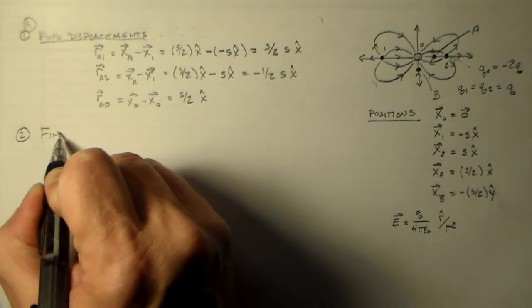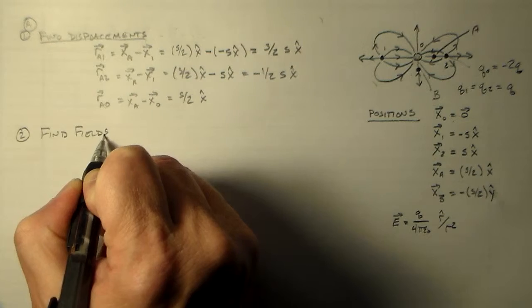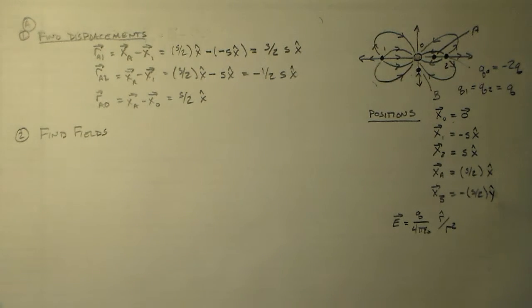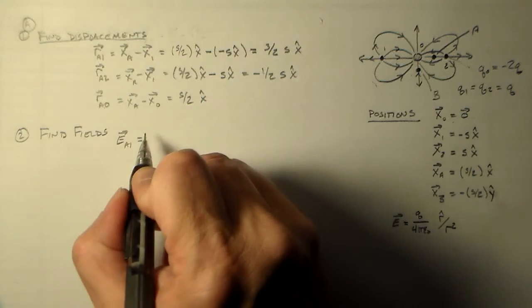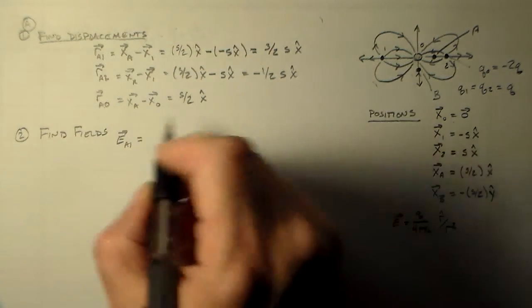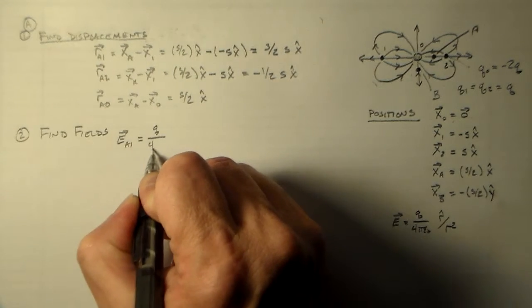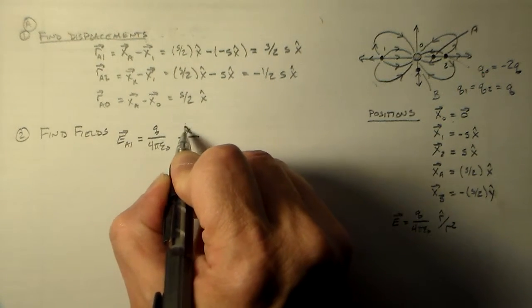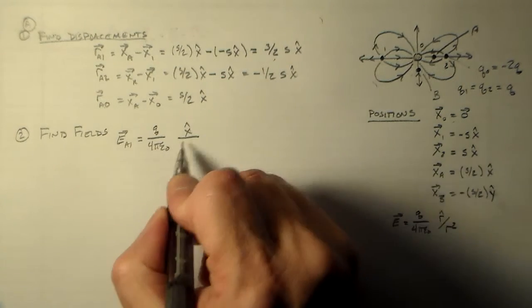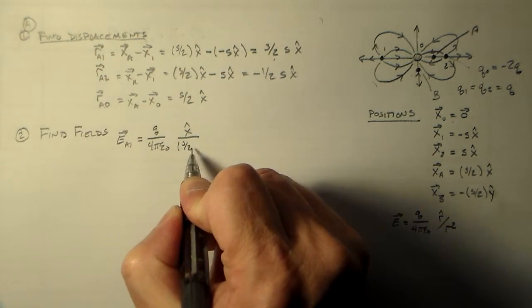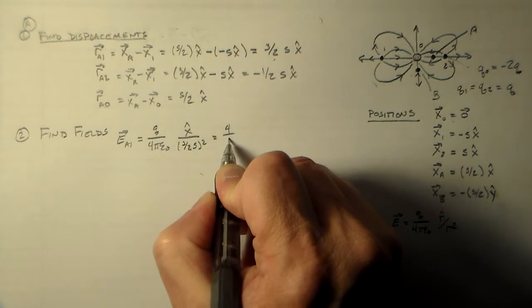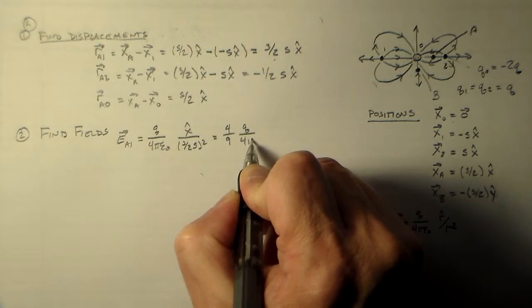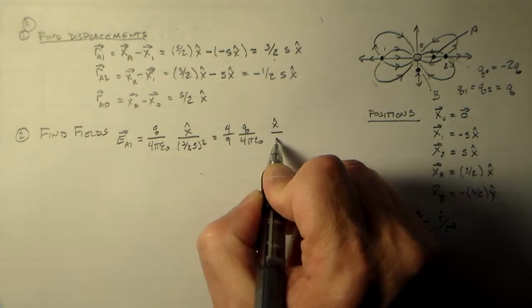So then we need to find the fields. And since they're all in the x hat direction, actually these are fairly simple looking fields. Ea1 is going to equal, the charge on one is q, so we have q over 4 pi epsilon not. This has to be in the x hat direction. And we've got 3 halves s squared, which is 4 ninths q over 4 pi epsilon not in the x hat direction over s squared.